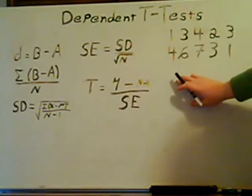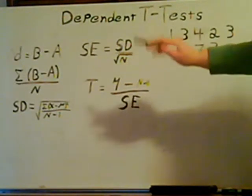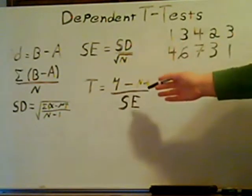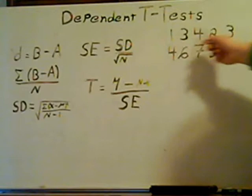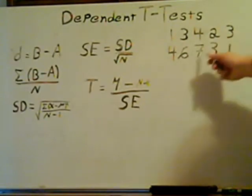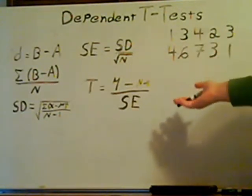The degrees of freedom are going to be N minus one. N is five because there are five different cases, so your degrees of freedom is four.